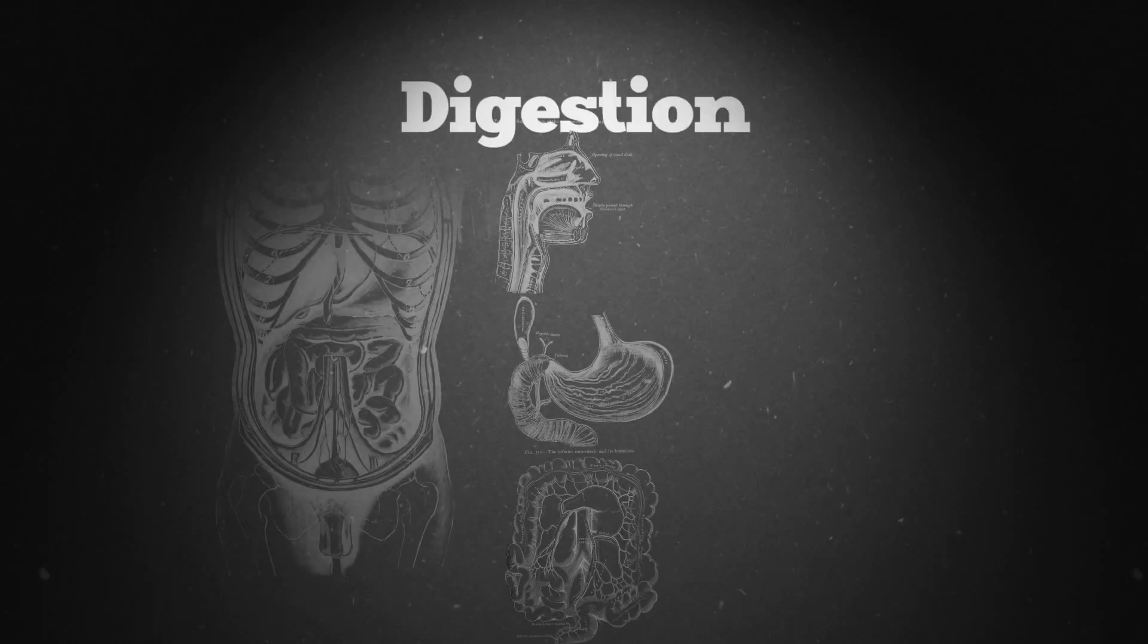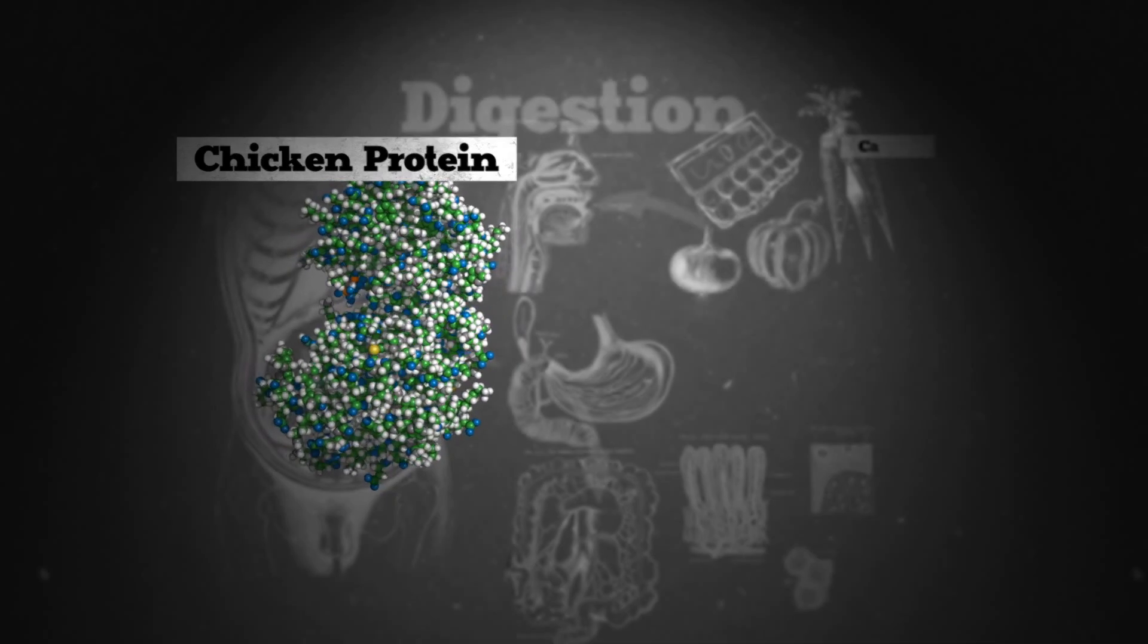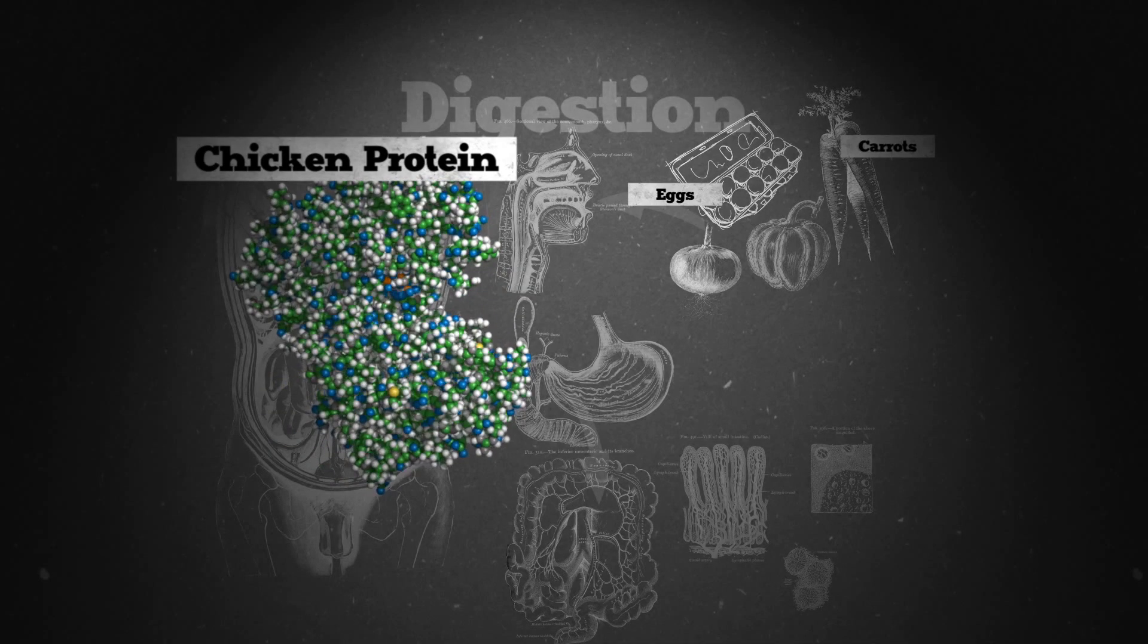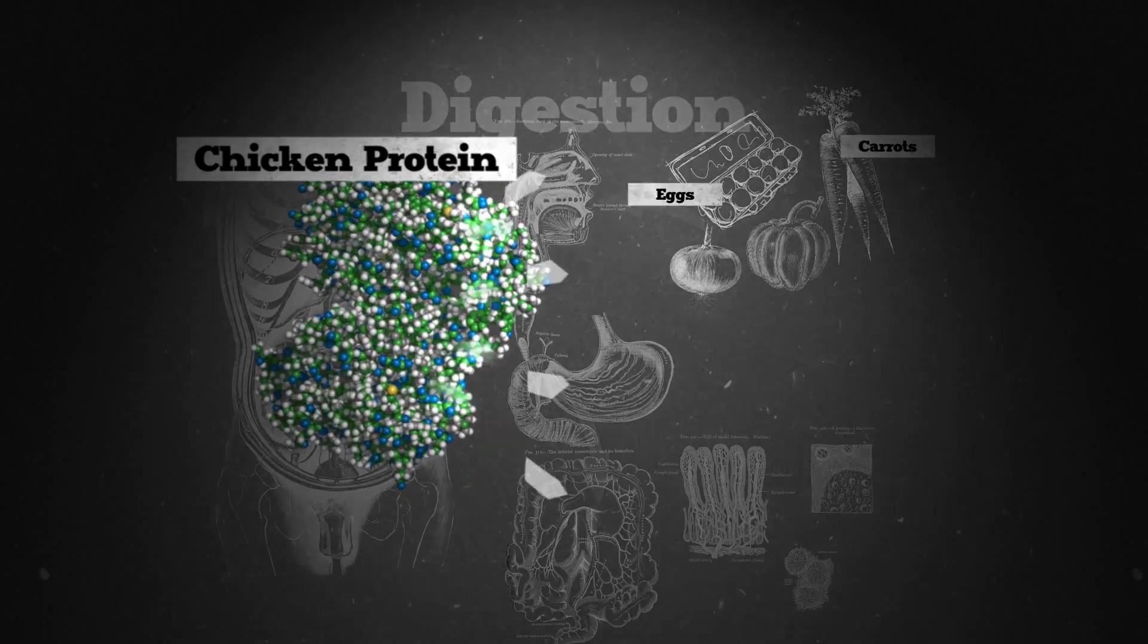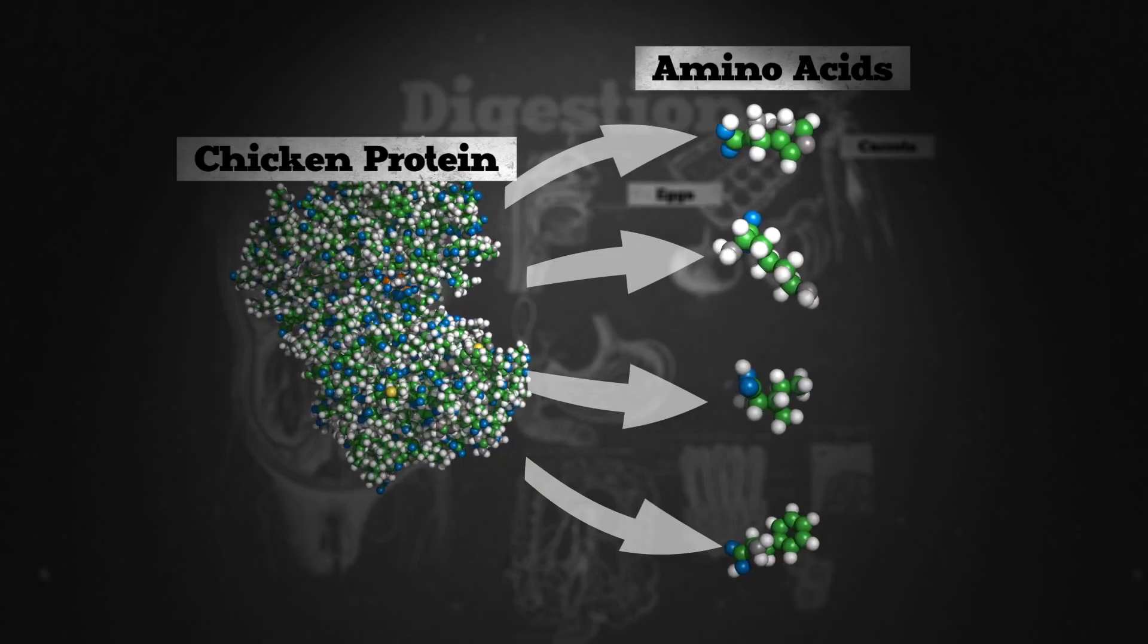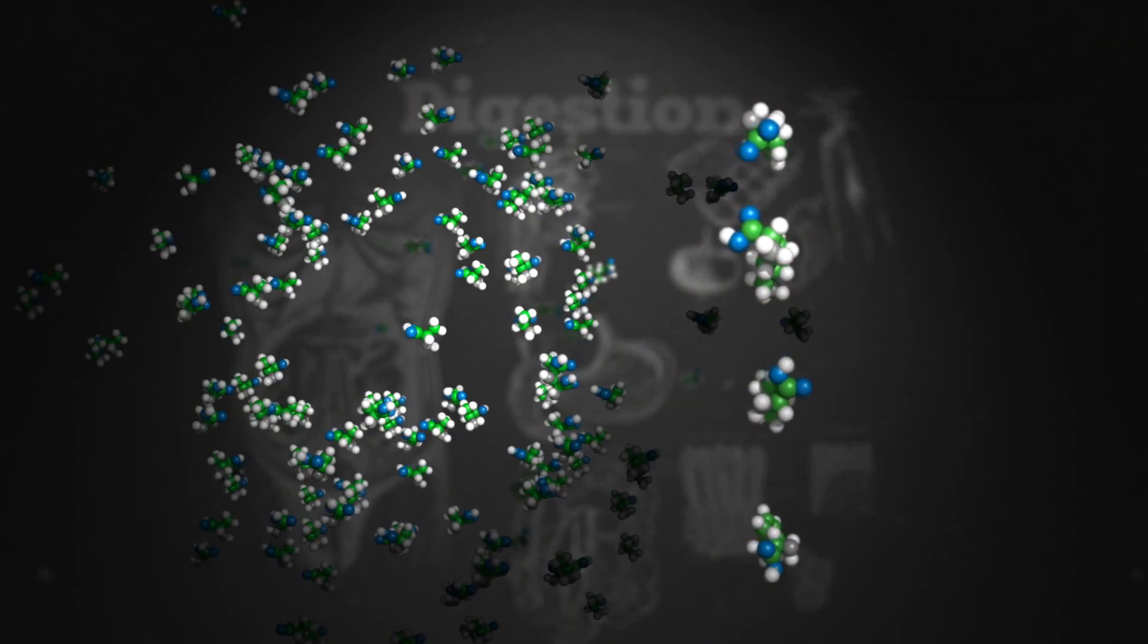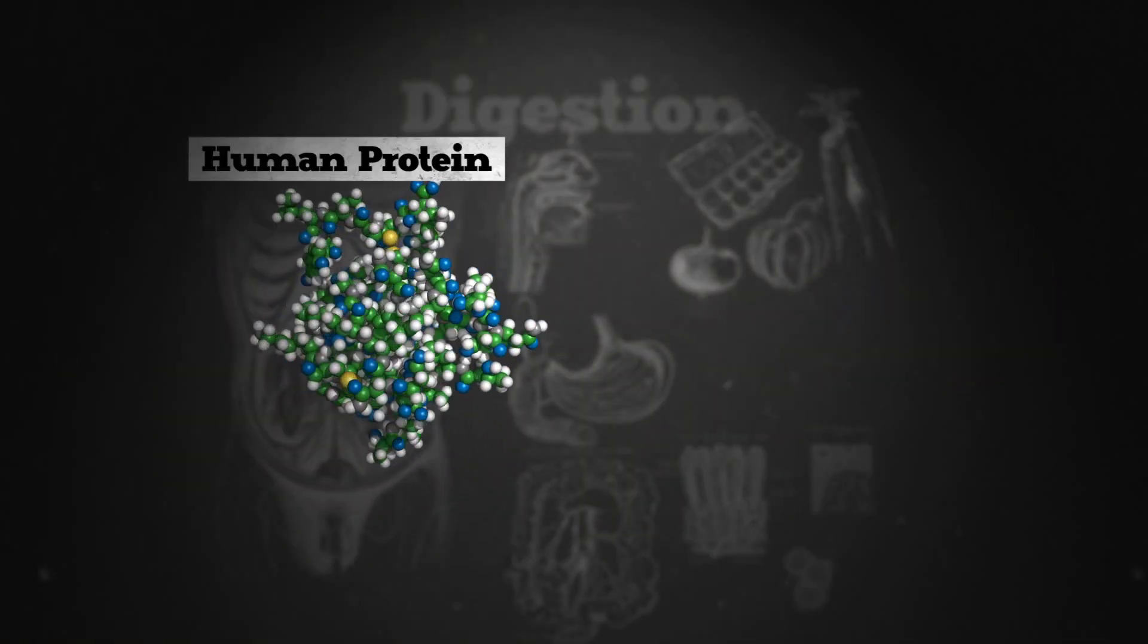This type of breaking apart and recombining is what goes on when you digest food. The complex proteins found in the foods we eat, like carrots and eggs, can't be used by our bodies because we are not carrots or chickens. What we can use are the smaller molecules that make up these proteins, the amino acids. During digestion, our bodies break these proteins up into their amino acids so they can be rearranged and put back together to make human proteins.